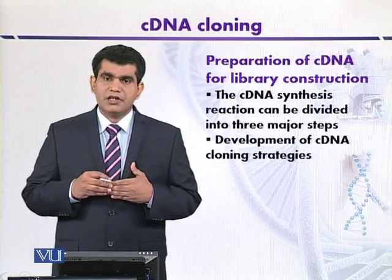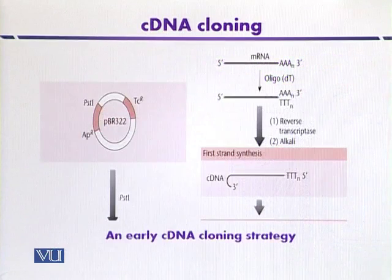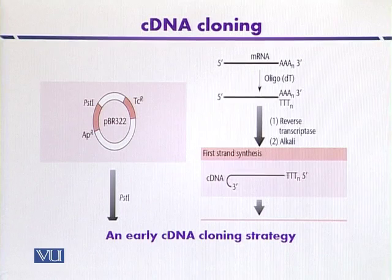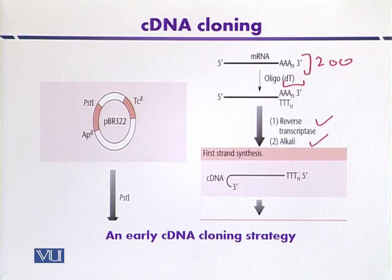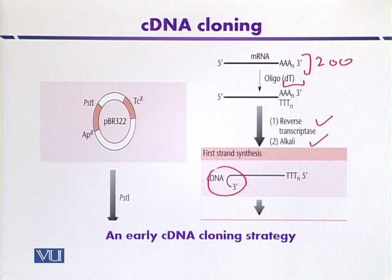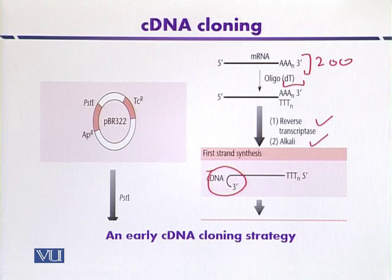This process can be explained with the help of a diagram. With reference to homopolymeric tailing: naturally, adenine residues are present at the three prime end of messenger RNA, around 200 in number. Against these adenine residues, thymine residues are added as a primer. Then, in the presence of reverse transcriptase and alkali, the first strand of cDNA is synthesized. At the five prime end it folds on itself, forming a hairpin loop structure used to direct second strand synthesis.